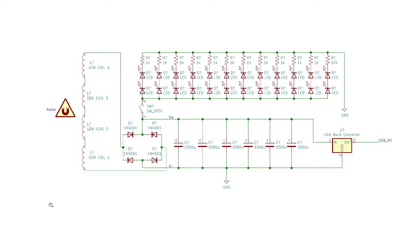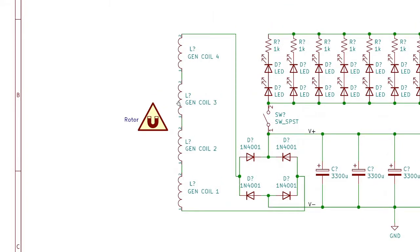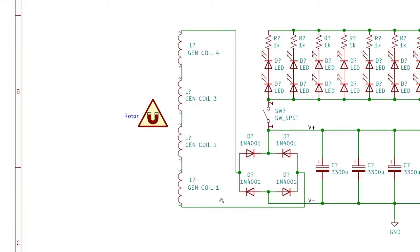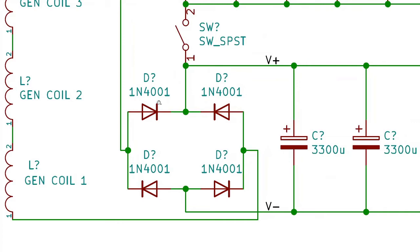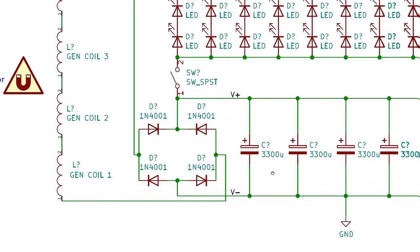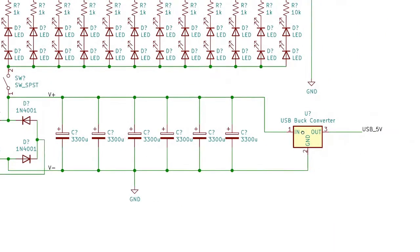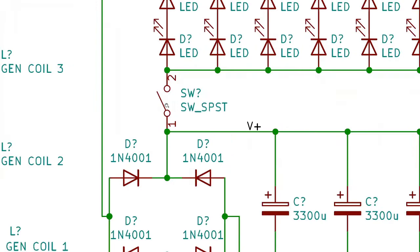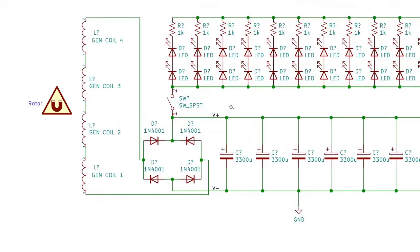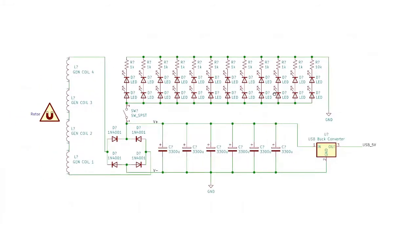Before I power everything up, let's take a look at the schematic. It starts over here with the rotor represented as a little magnet symbol, and that spins around the four coils, which are wired in series. Those coils then feed a bridge rectifier, which turns the alternating current into direct current, and that voltage is stored in a big bank of capacitors. So those capacitors feed the buck converter chip in the USB charger, and there's also a switch on here that turns on the LED array, which is powered by the capacitor bank.